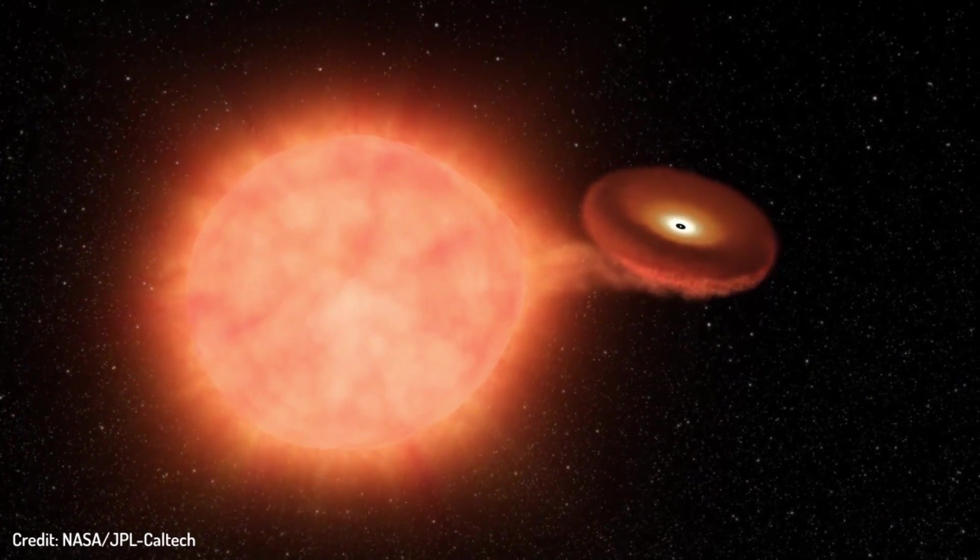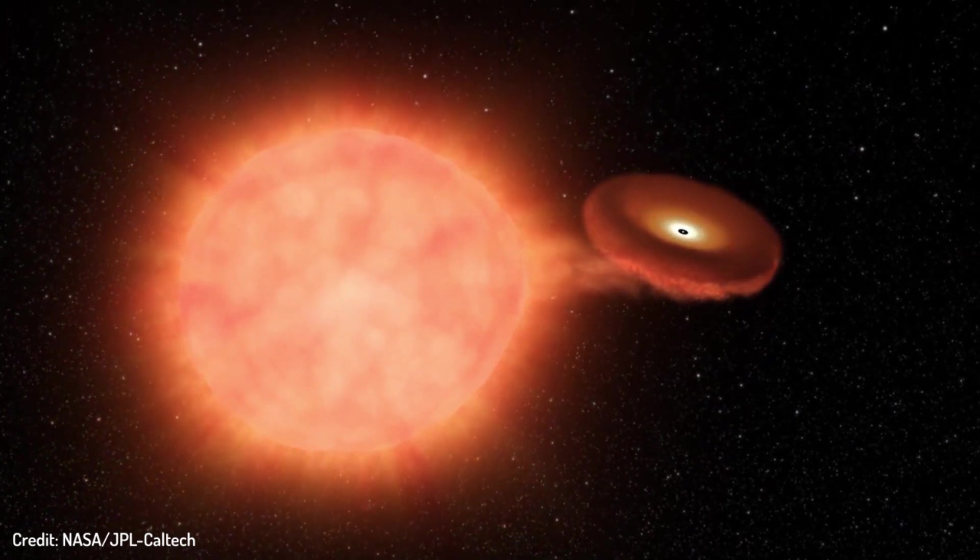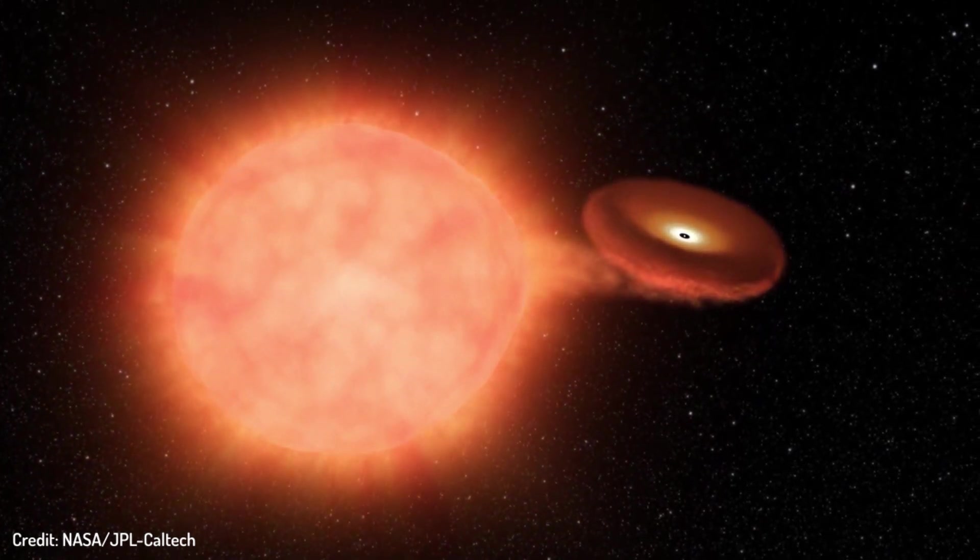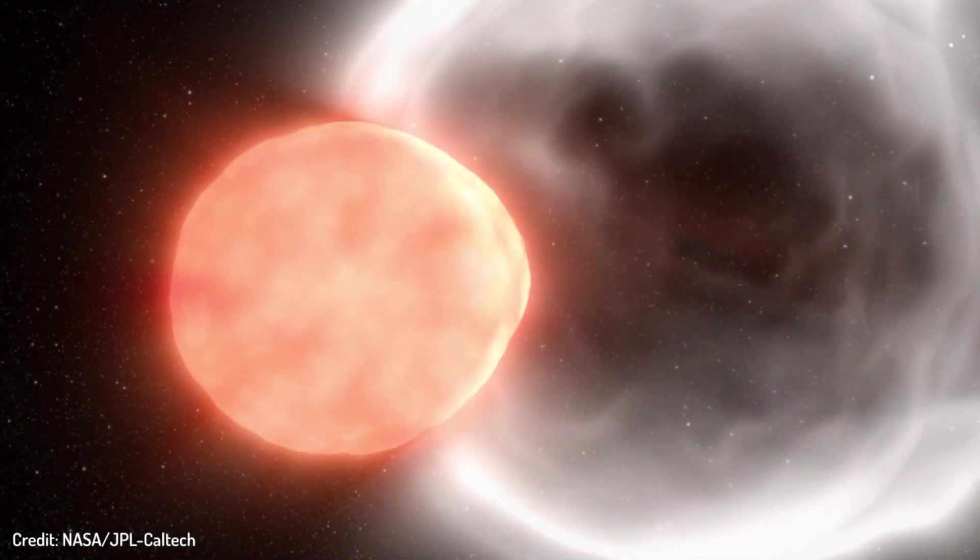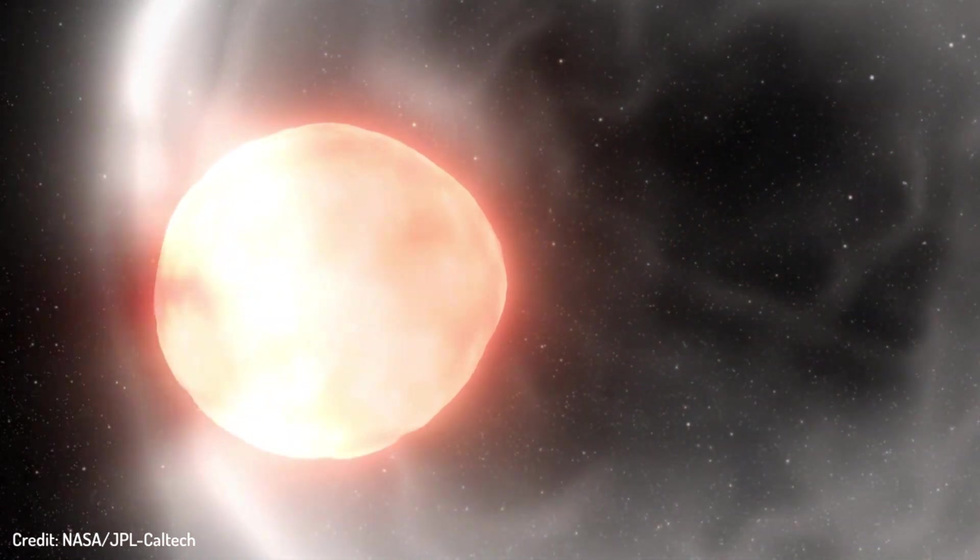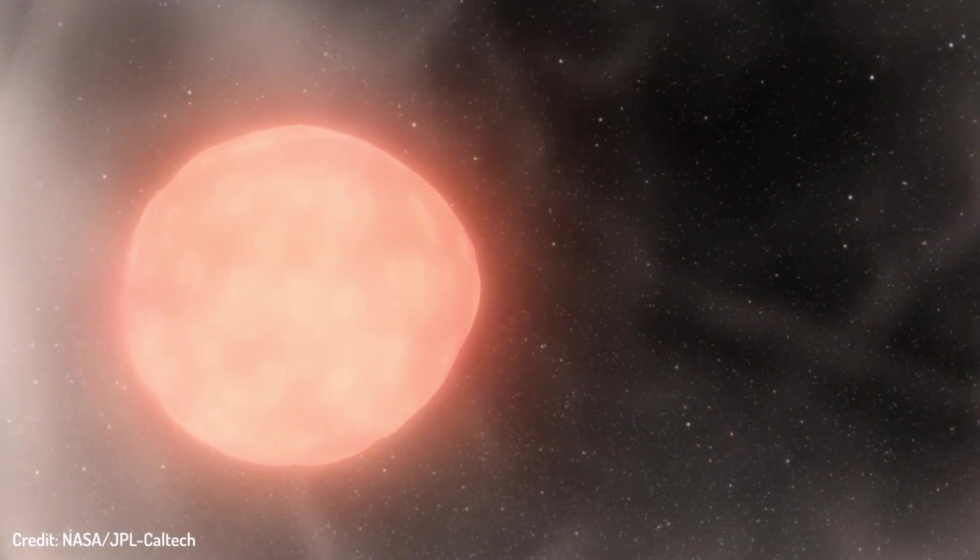But there is one star, IK Pegasi B. It's the nearest known supernova progenitor candidate. It's a binary star system located about 150 light years from us. It's still a white dwarf and it will probably take millions of years until it explodes.